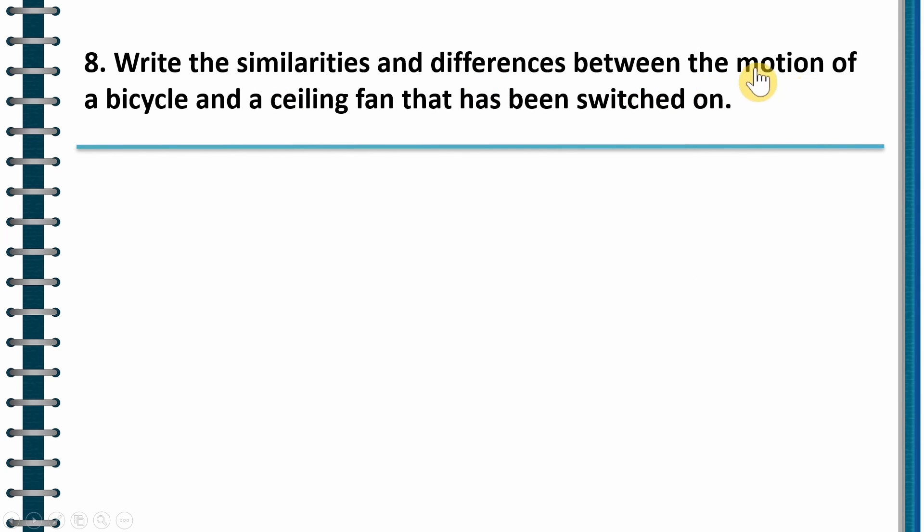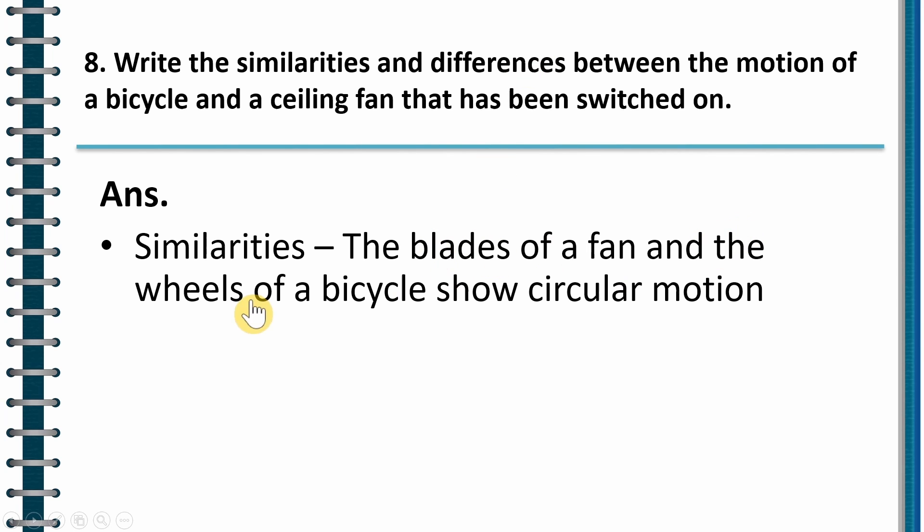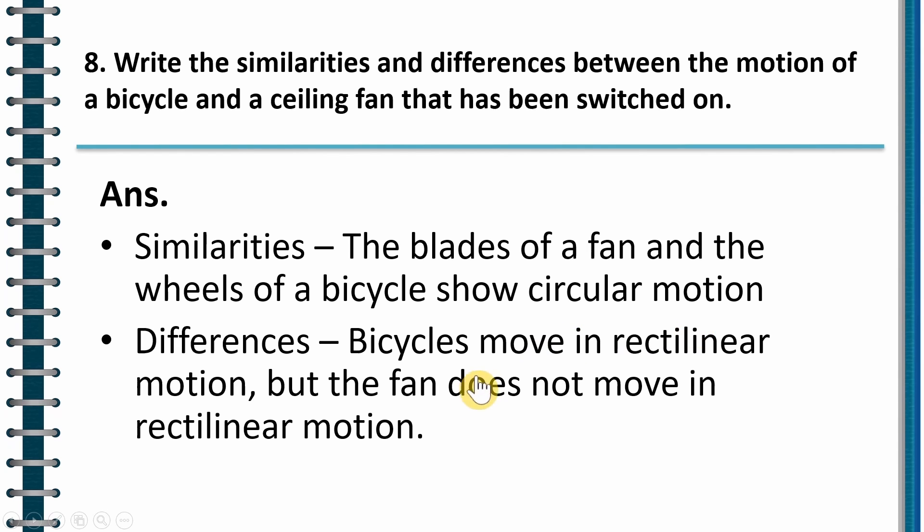Let us see next question now. Write the similarities and differences between the motion of the bicycle and a ceiling fan that has been switched on. So we have to write similarities as well as differences. Similarities: The blade of the fan and wheel of the bicycle shows circular motion. Meaning both of them go round and round. Correct? And the difference is what? Bicycle moves in a rectilinear motion, meaning bicycle is straight line. In fact, the fan does not move in rectilinear motion. The fan can't move straight.